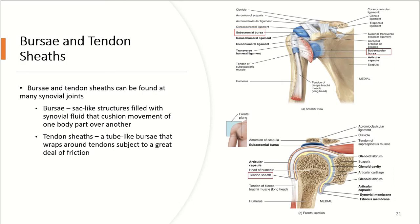Another common characteristic of synovial joints is bursas and tendon sheaths. A bursa is a sac-like structure filled with synovial fluid that cushions movement of one part of the body as it moves across another — for example, between the humerus and scapula. A tendon sheath is a tube-like bursa that wraps around tendons subject to great friction, helping to reduce friction experienced at the joint.